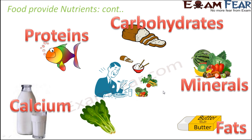Butter, ghee, and cheese are rich in fats, and fats are instant sources of energy. However, consuming too much fat can lead to overweight and obesity, which can later cause diseases like heart disease and diabetes. Green vegetables like spinach are a very rich source of vitamins. These are all different types of nutrients.